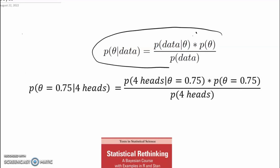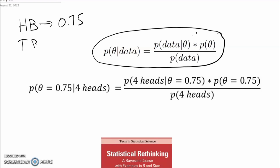So last week, we saw Bayes theorem and we used it to solve a little problem. The problem was that there's a coin — Acme Coin Company — that makes head bias coins with a probability of 0.75 of coming up heads, and tail bias coins with a probability of 0.25 of coming up heads. I had a coin in my pocket and I wanted to determine the probability that it was a head bias coin, so I did a little experiment. Ultimately, I calculated the posterior belief of having a head bias coin, given the data I got when I flipped the coin 10 times and got four heads.